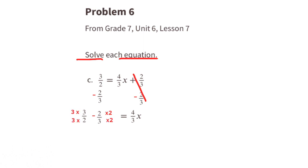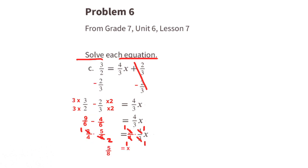Now the equation reads 9 sixths minus 4 sixths equals 4 thirds X. 9 sixths minus 4 sixths equals 5 sixths. And then multiply both sides by the reciprocal of 4 thirds, which is 3 fourths. The value for X is 5 eighths.